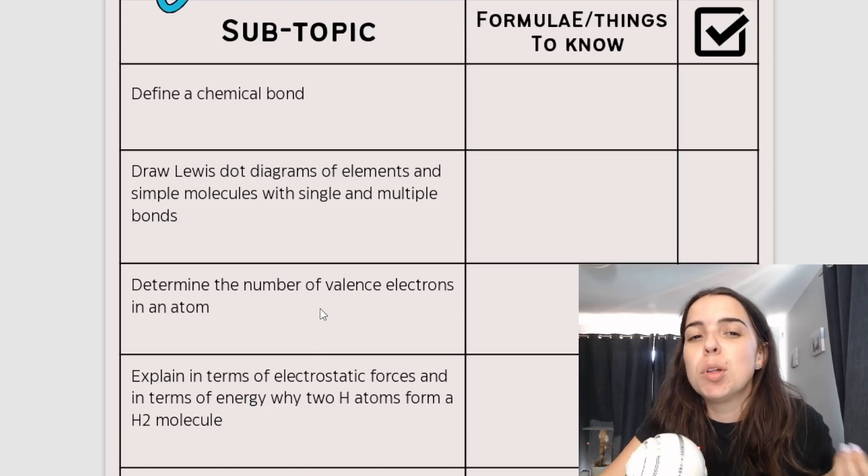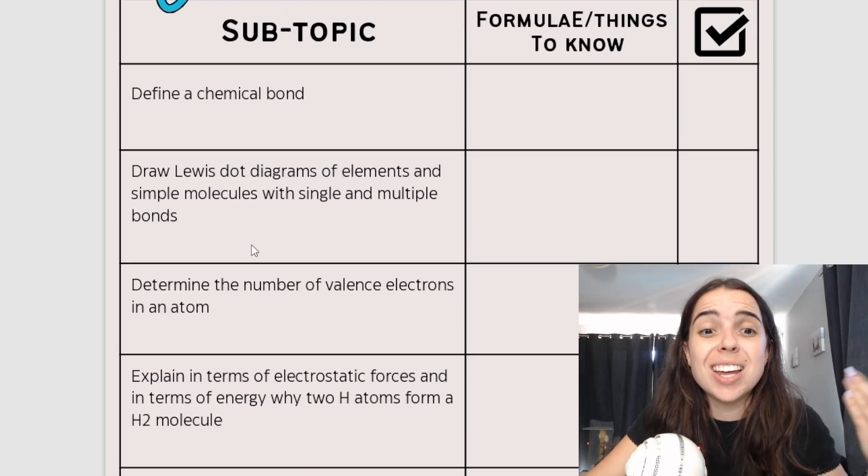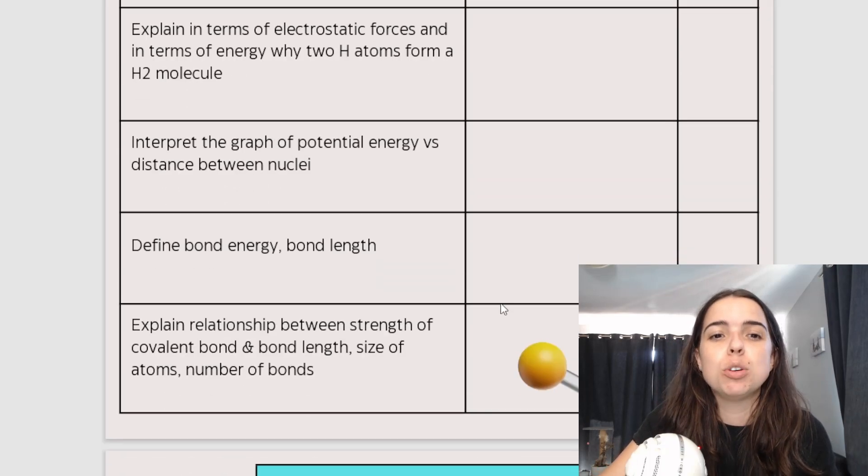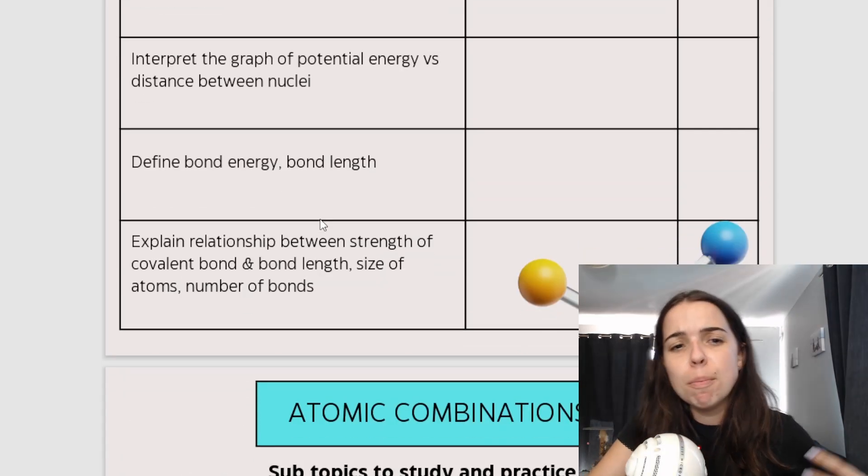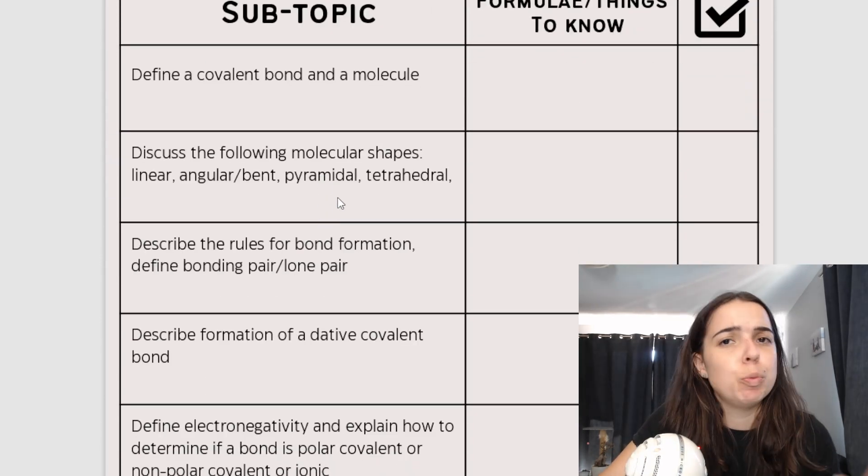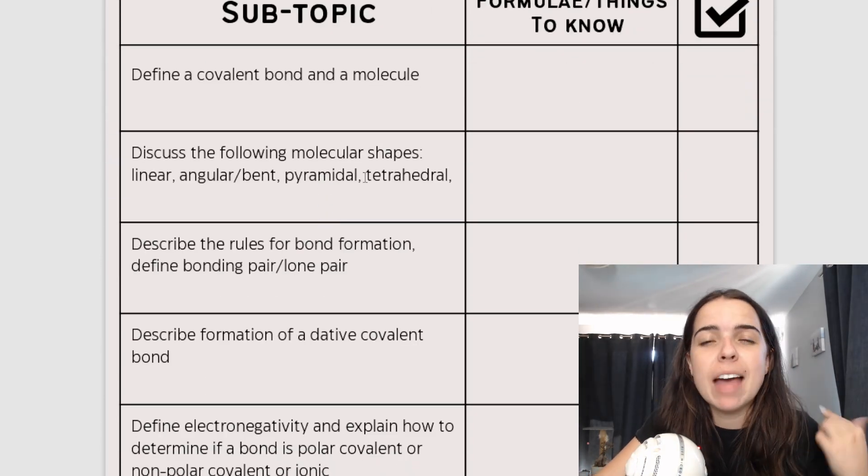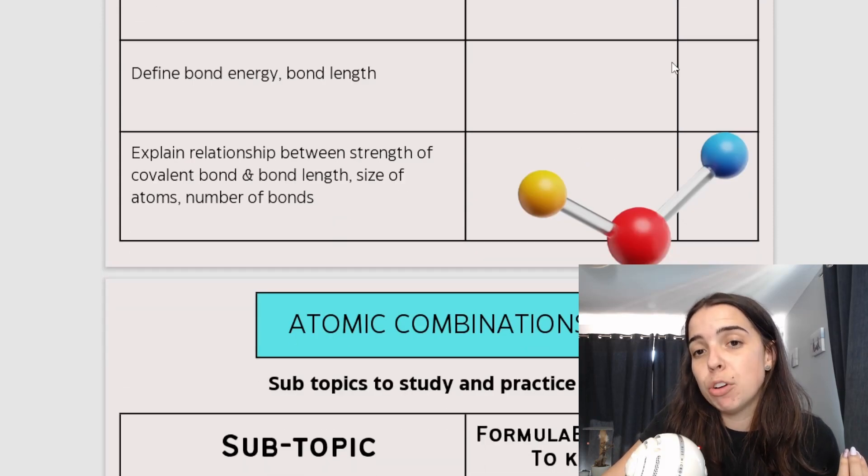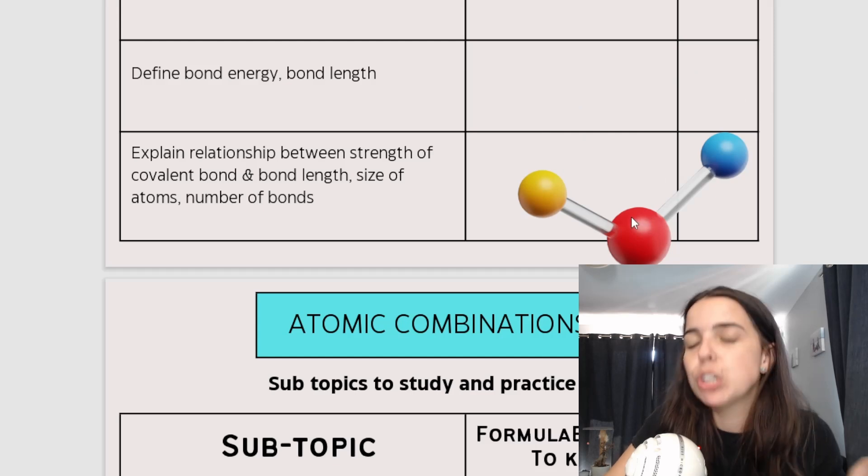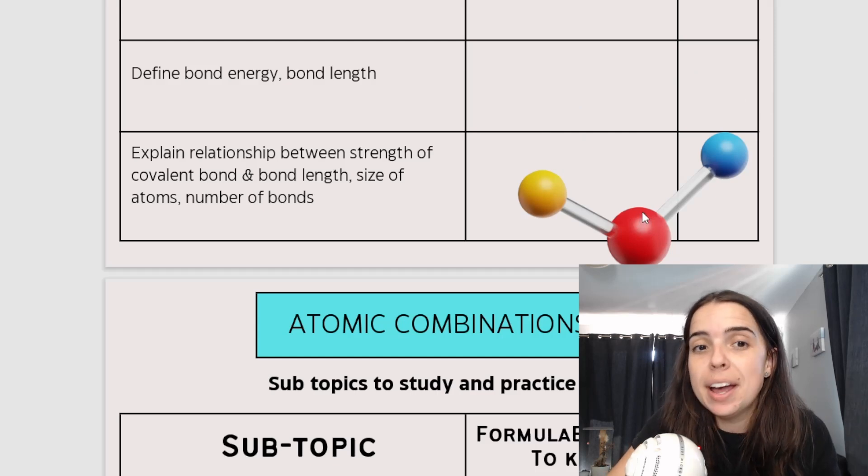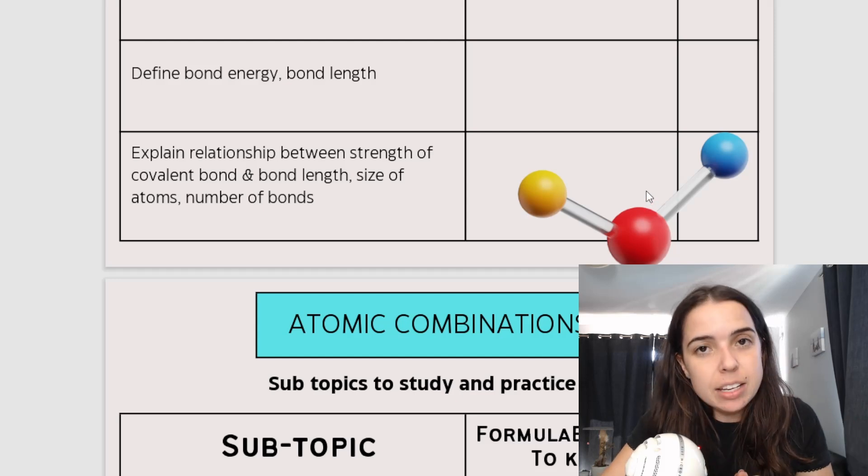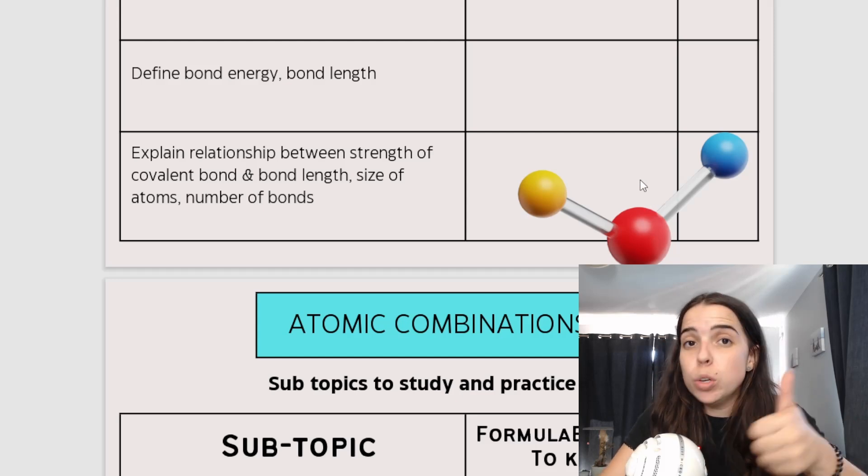Basically, you need to know about chemical bonding. You need to draw Lewis dot diagrams. You need to understand valence electrons. You need to be able to define bond length, bond energy. We speak a lot about covalent bonds, and then molecular shapes. So for example, the shape of this compound over here, this is called a bent shape or an angular shape. For example, water, H2O, has a bent shape. You'll be able to tell what shape the molecule is based on the Lewis dot diagram.